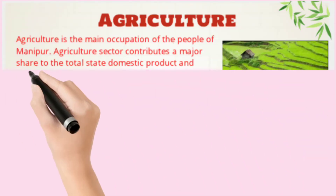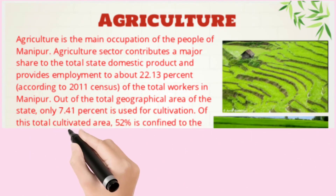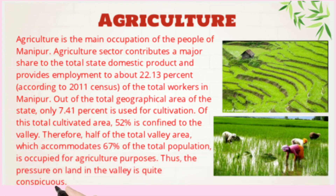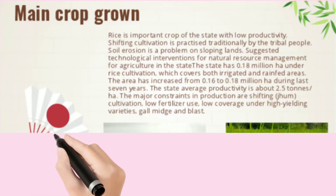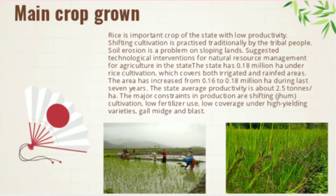Agriculture is the main occupation of the people living in Manipur. Rice is the most important crop of the state, though it is grown with low productivity.